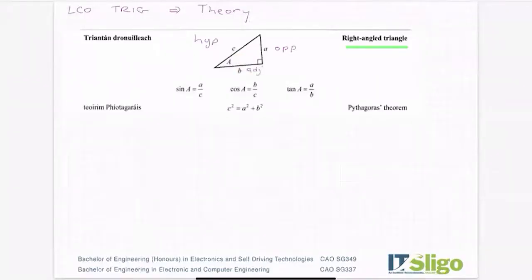Adjacent being another word for beside or close. So A, B, C: hypotenuse, opposite, adjacent. There is always a rhyme and silly old Harry is one. Caught a herring trawling off America. So you can remember sine, cos, tan with a rhyme like this. Silly old Harry caught a herring trawling off America.